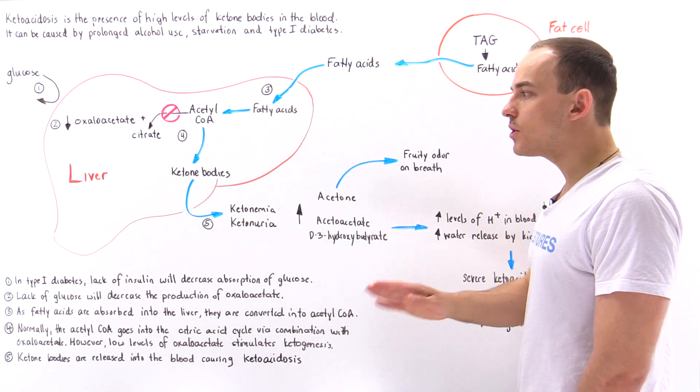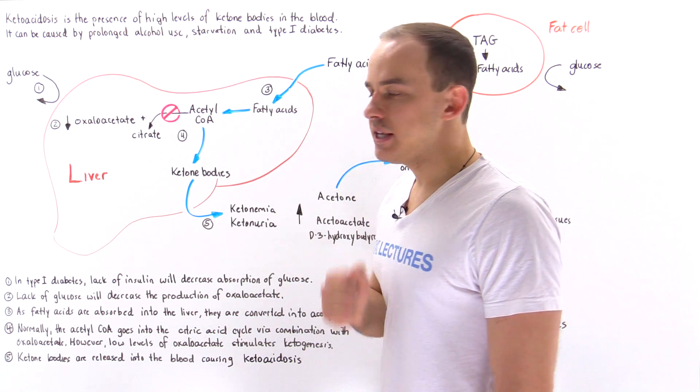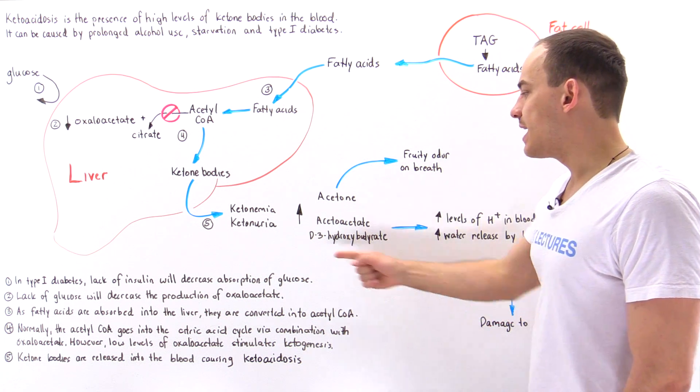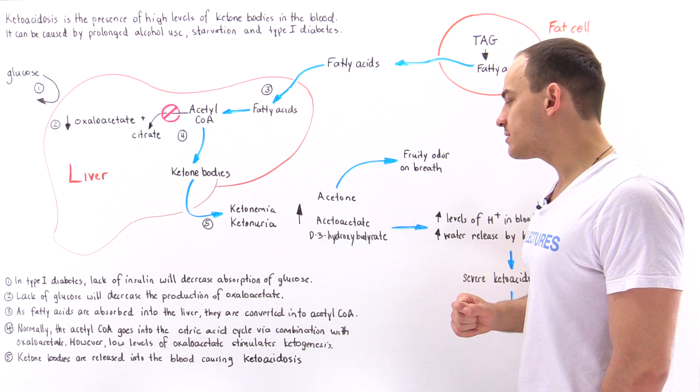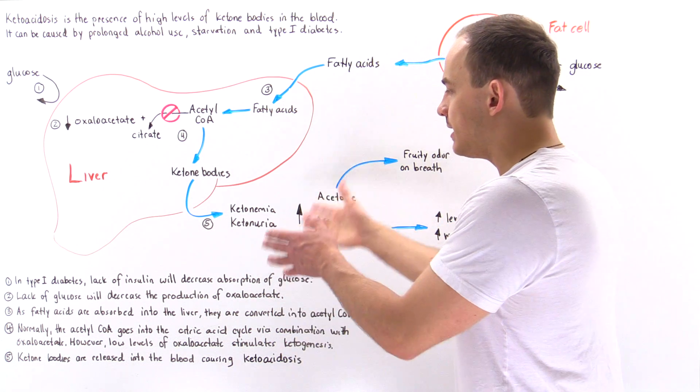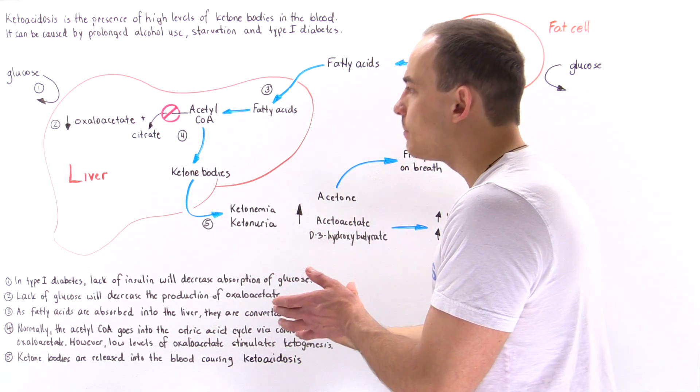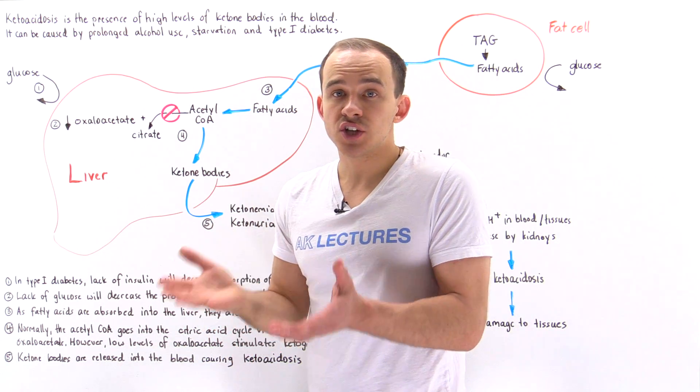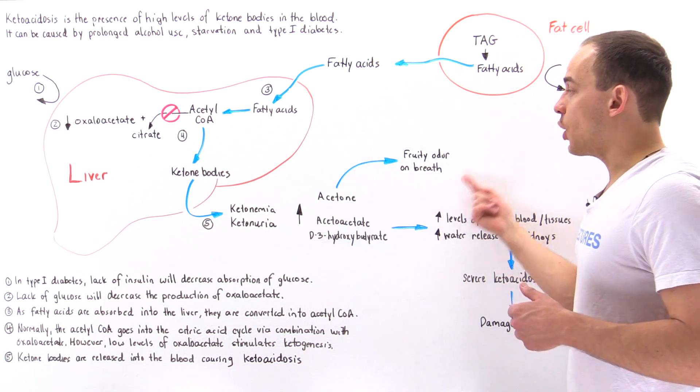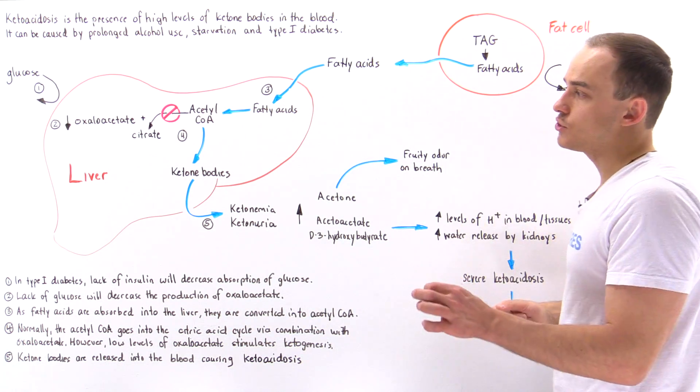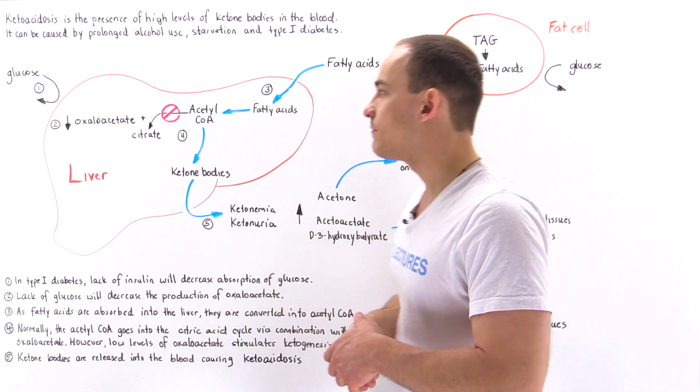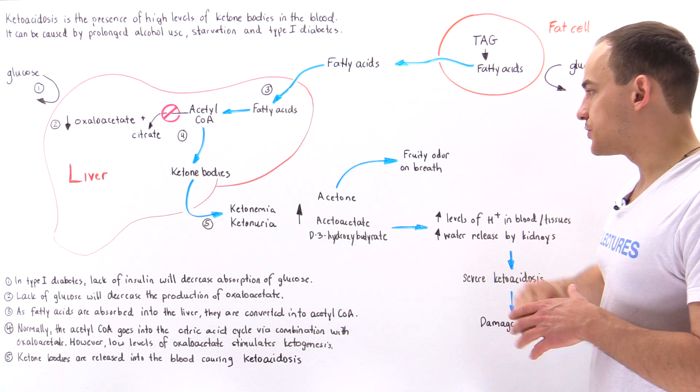We have three types of ketone bodies: acetone, acetoacetate, and D3-hydroxybutyrate. Now acetone is simply a ketone body that cannot be metabolized by our cells, and so we're simply going to release it via our breath. We're going to get a fruity odor on breath, and so physicians can test the breath of individuals to see if they actually have ketoacidosis.